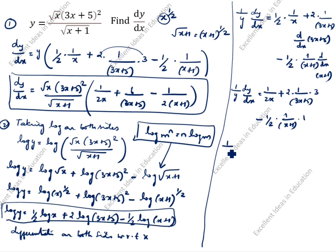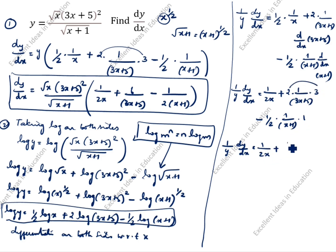So the final expression: (1/y) dy/dx equals 1/(2x) plus 6/(3x+5) minus 1/(2(x+1)).